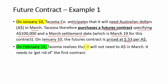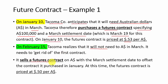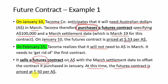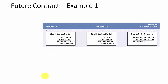More than a month later, Tacoma realizes it will no longer need Australian dollars and therefore has to get rid of the first contract. It does so by selling a futures contract on Australian dollars. Remember, on January 10 it initiated a buy contract. Now it has a new sell contract — 100% the same as the one it purchased in January: same settlement in March, same volume of 100,000 Australian dollars. The only difference is that on February 15, the futures contract price is now 50 cents per Australian dollar.